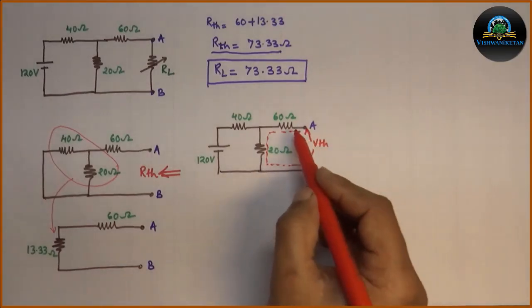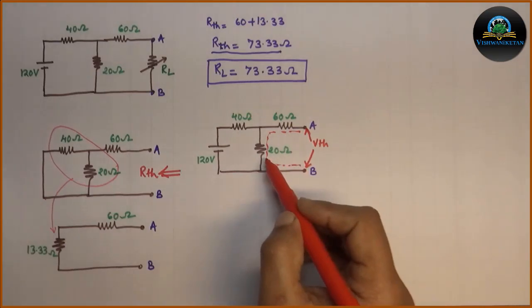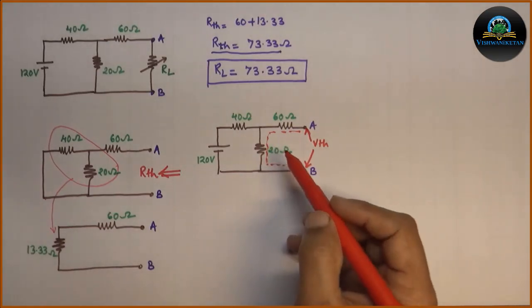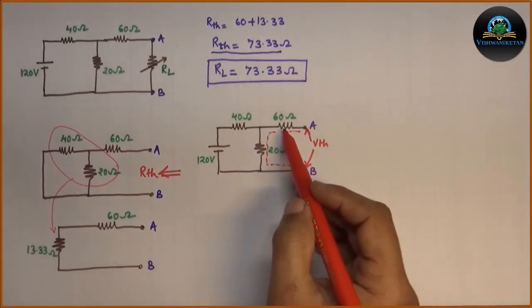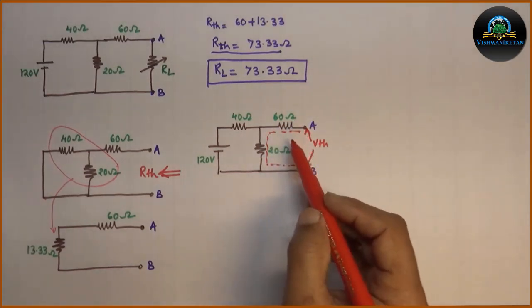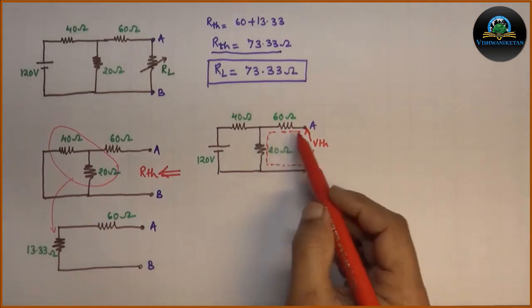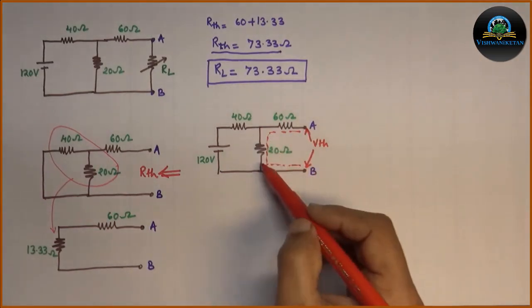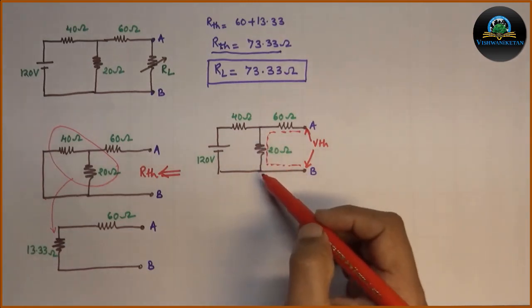Hence, VTH will be equal to voltage drop across 60 ohm resistor plus voltage drop across 20 ohm resistor. As 60 ohm resistance is connected with open circuited terminals, no current flows through 60 ohm resistor. Therefore, VTH will be equal to only voltage drop across 20 ohm resistor.